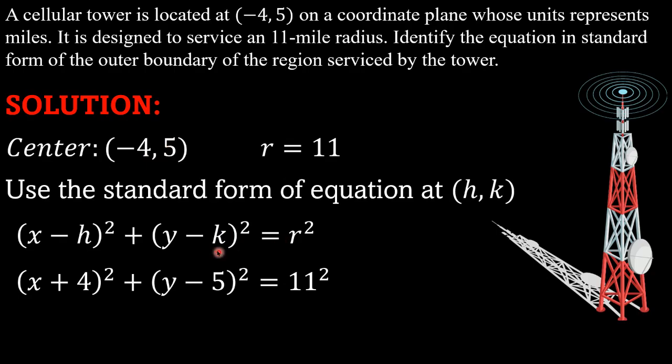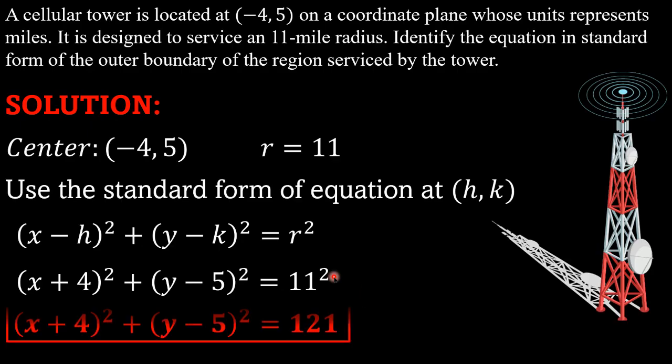We're not finished yet. The final answer is (x + 4)² + (y - 5)² = 121, because when you square 11, that equals 121.